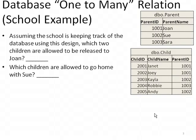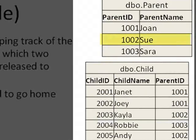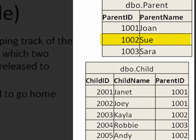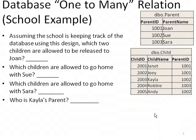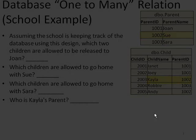So which children are allowed to go home with Sue? Sue is 1002. I see two instances: Kayla and Andy. Which children are allowed to go home with Sarah? Looks like Sarah has only one child, Robbie. So who is Kayla's parent? We see Kayla is 2003. Her parent is 1002. Looking up at the other table, that answer is Sue.